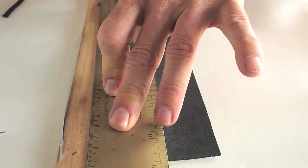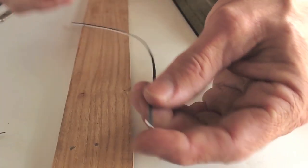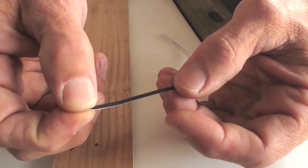The paper protecting the adhesive backing can be removed with gentle thumb pressure.